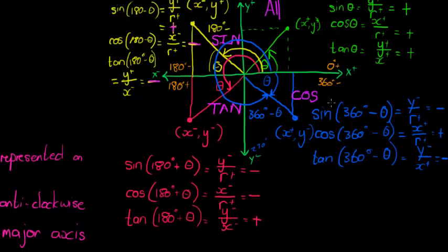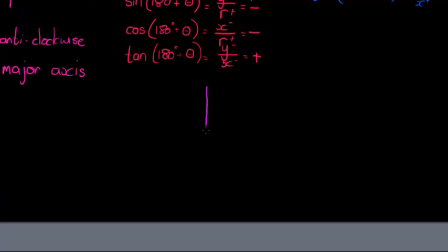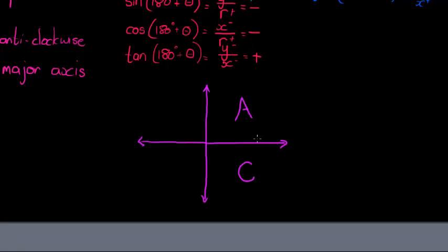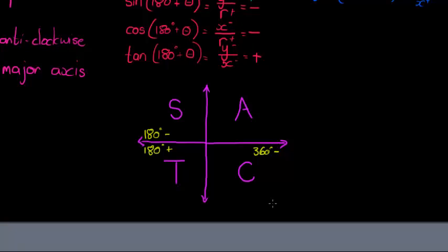Putting it all together: cos is positive in the fourth quadrant, all ratios are positive in the first quadrant, sine is positive in the second quadrant, and tan is positive in the third quadrant. This is what's called the CAST diagram. Include 180 degrees minus, 180 degrees plus, and 360 degrees minus on the CAST diagram. This is a summary of everything we did. If you can commit this to memory, great — if not, you can work it out along the way. In the next video, we'll look at applying this.